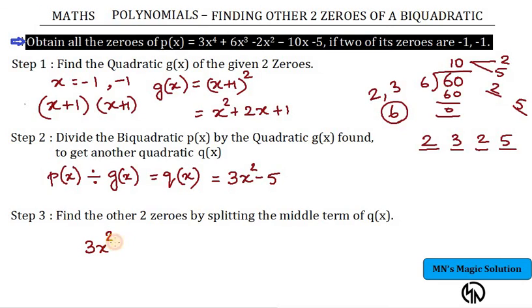3x² minus 5 is equal to 0. 3x² is equal to 5, so x² is equal to 5 by 3, or x is equal to plus or minus root 5 by 3. Squaring and taking square root on both sides you will get plus or minus. So the other two zeros become plus root 5 by 3 and minus root 5 by 3. So these are the other two solutions.